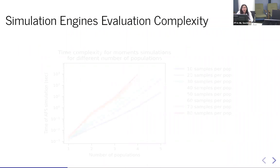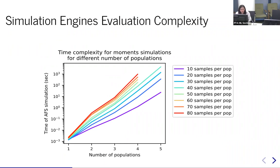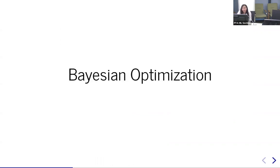GADMA currently handles up to three populations. This is because the computational complexity of simulations is exponential in the number of populations. For three populations the genetic algorithm works well, but for four and five populations it becomes very slow. We wanted to extend GADMA to handle more populations, which is where Bayesian optimization comes in.